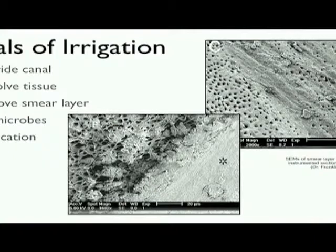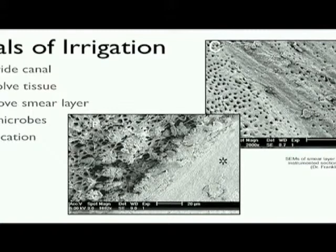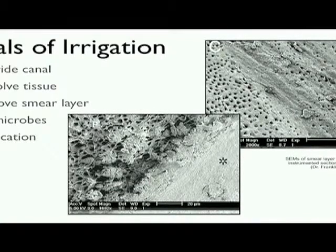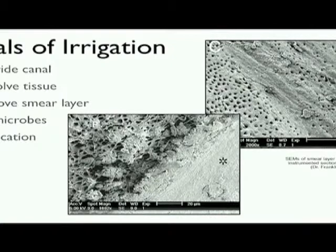I'd like to show you a couple of beautiful SEMs from the Franklin Teis Group from the University of Georgia. The lower image on the left side clearly shows an untouched area — we can see some pre-dentine and necrotic pulpal remnants. On the right side of the same image, we can see smear layer. The area is flat, so instruments have touched this area, but we can't see any dentinal tubules — it's still smeared.